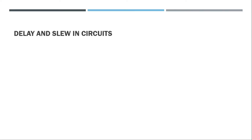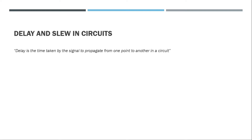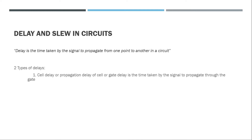One of the fundamental and very important terminologies that we use is delay, and also slew, in circuits. Delay is nothing but the time taken by the signal to propagate from one point to another point in the circuit — be it from cell to cell, from one end of a wire to another end of a wire, or from one pin of a chip to another pin of a chip. It takes a finite amount of time to travel from one place to another.